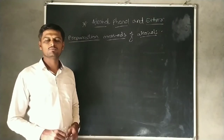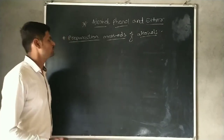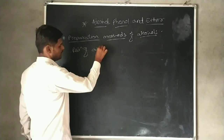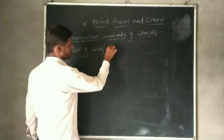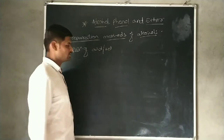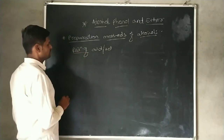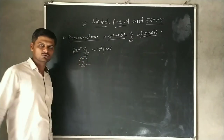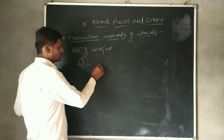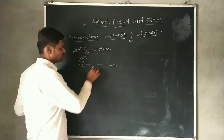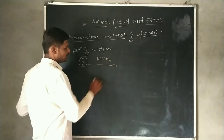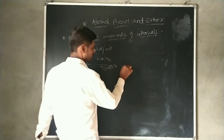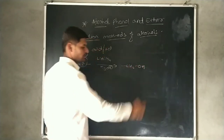Hello guys. In the previous lecture we showed the reduction of aldehyde, ketone, carboxylic acid as well as ester — that means we showed the reduction of carbonyl compounds. This carbonyl compound undergoes reduction reaction by using lithium aluminium hydride in presence of acidic hydrolysis, then it gives an alcohol.